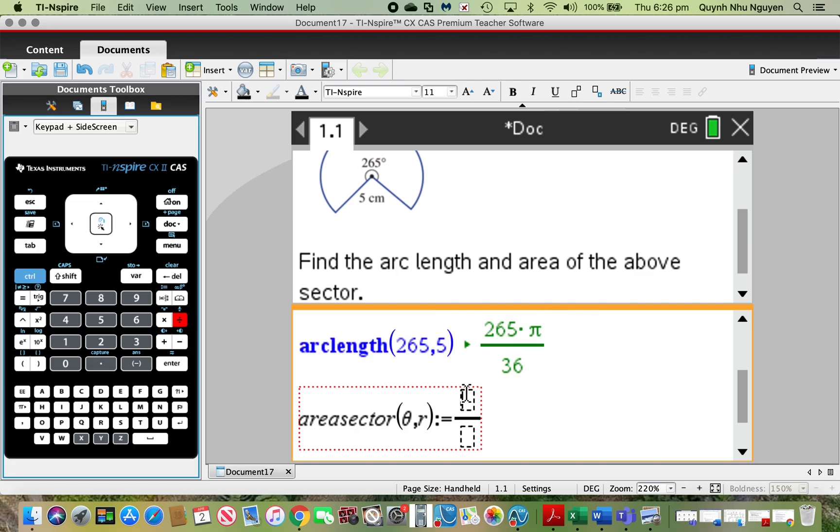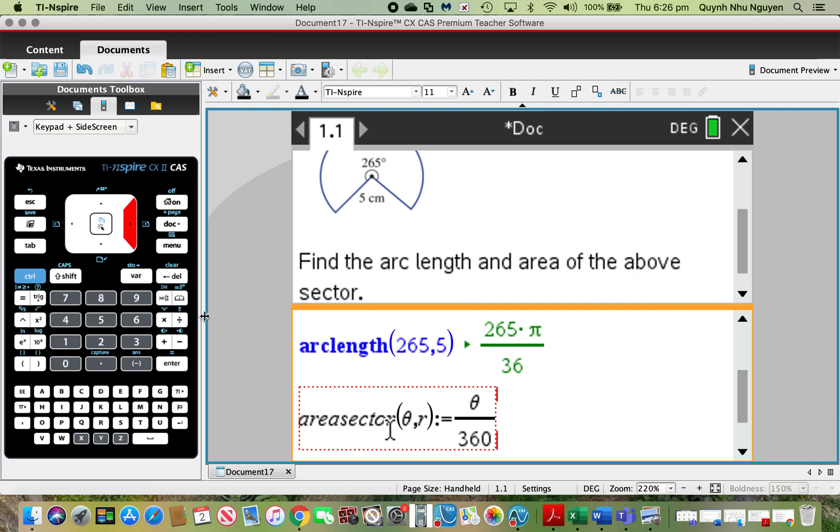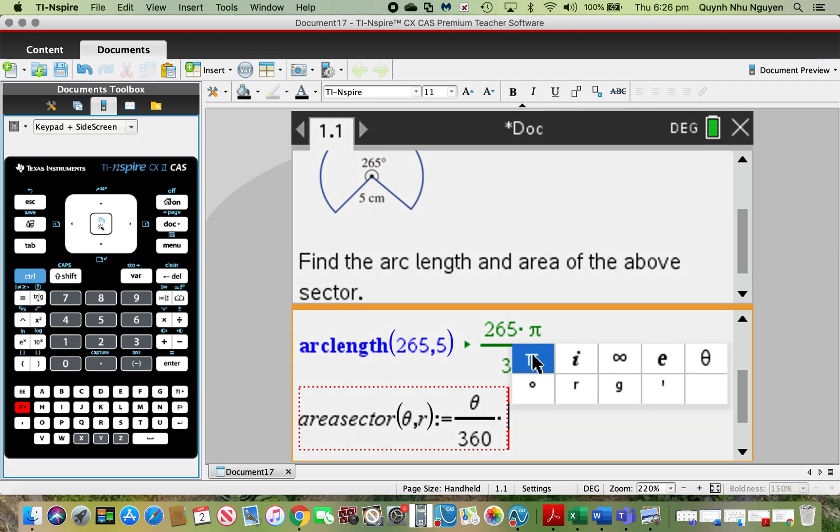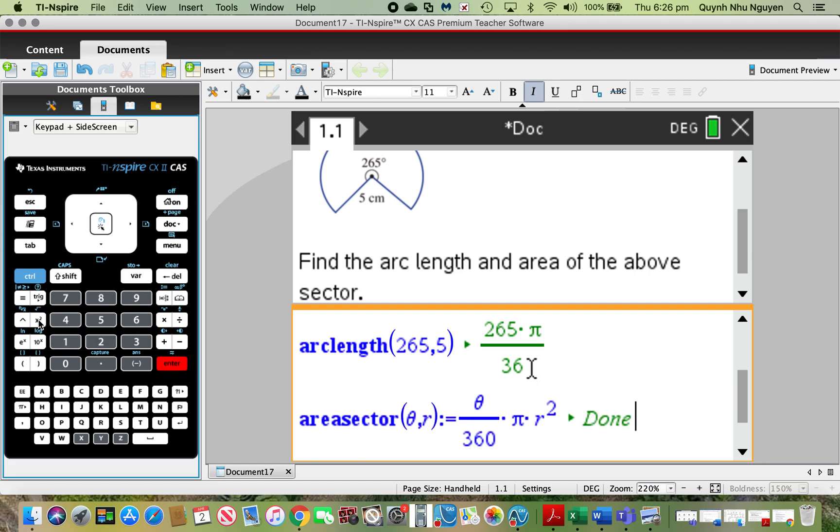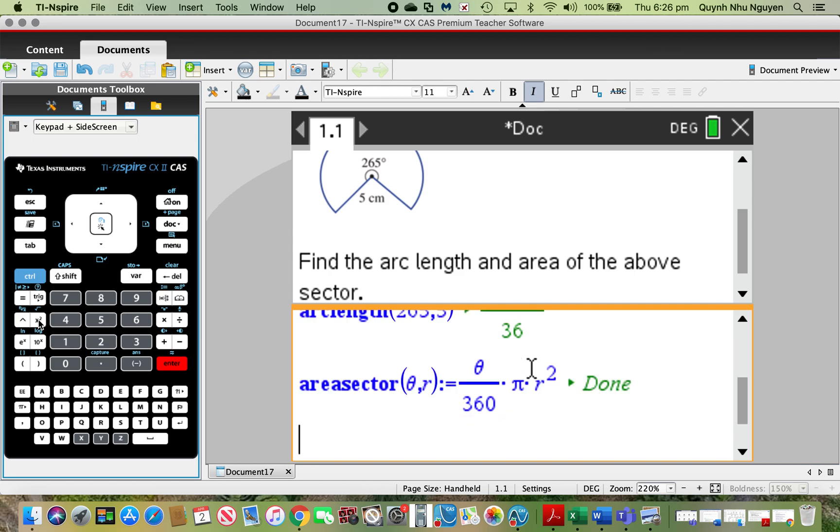I'm going to type in the rule. My area of a sector is just a fraction of the area of my full complete circle. So theta over 360, right navigation button, multiply by πr². Once you've typed in that general rule, the calculator will remember that for you. Then I'm going to hit enter.